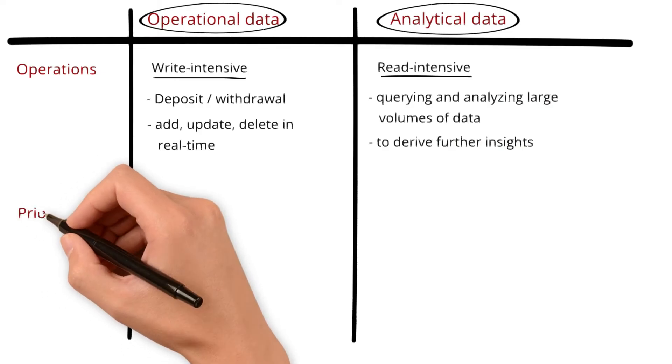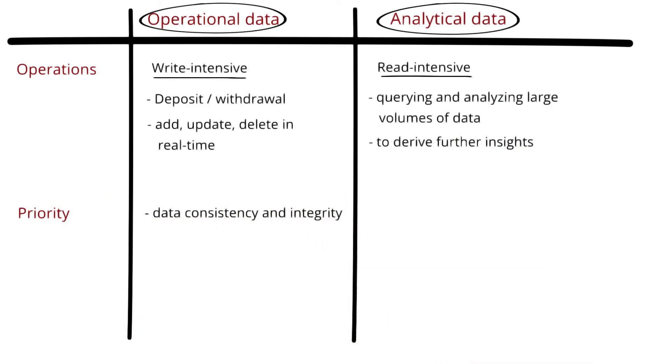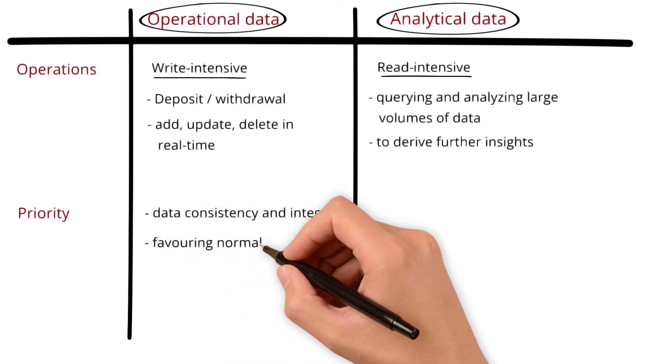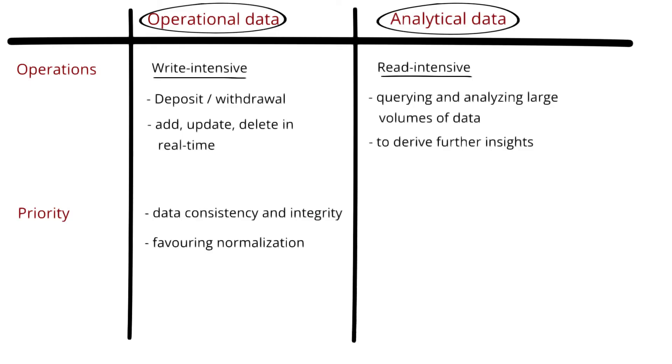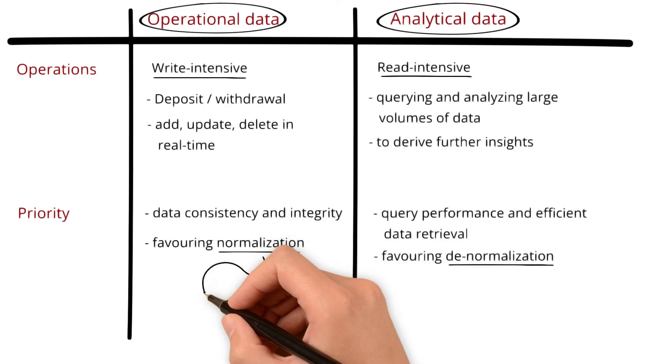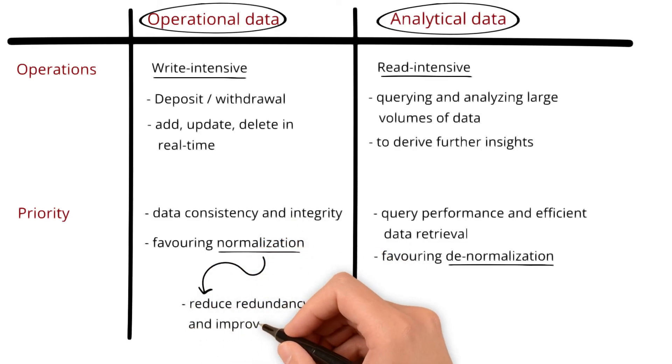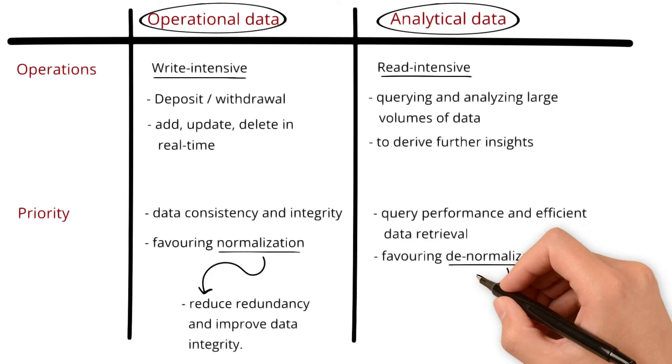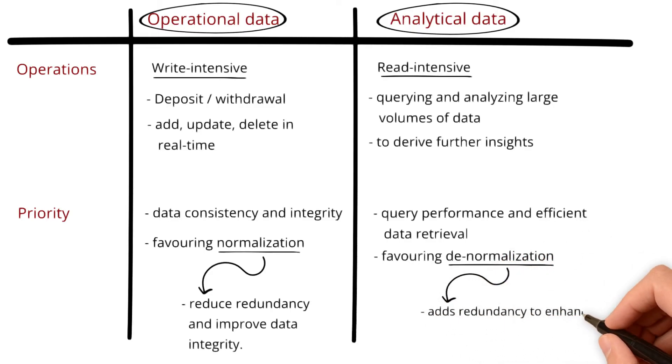Next up, operational databases are designed for write-intensive operations favoring normalization, while analytical databases prioritize query performance and efficient data retrieval, as it is read-intensive, favoring denormalization. What is normalization and denormalization here? They are database design techniques. Normalization is the process of organizing data in a database to reduce redundancy and improve data integrity. It involves structuring tables and relationships to eliminate data anomalies and dependencies during write operations. Denormalization intentionally adds redundancy to data, aiming to enhance application performance and simplify query processing.